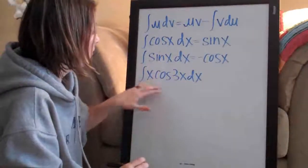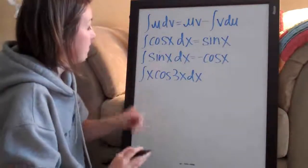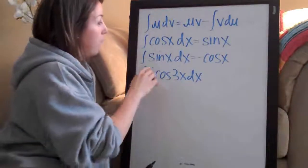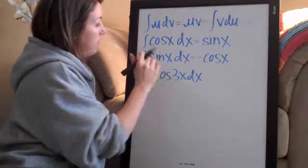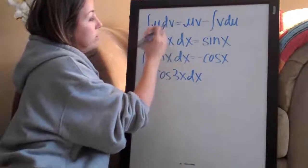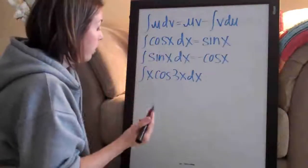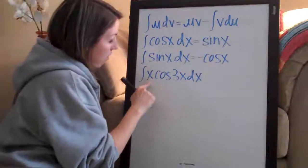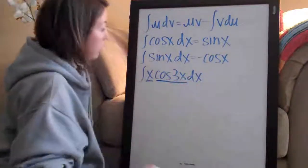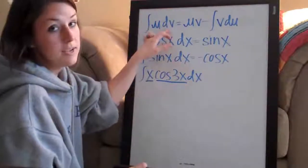Okay, so this is our problem. The first thing we need to do is assign u and dv values. As I explained in the other integration by parts videos, this function is represented in the formula by the u and dv side of the equation. In our problem, one term is x and the other term is cosine of 3x, so we need to decide which one is going to be u and which one is going to be dv.